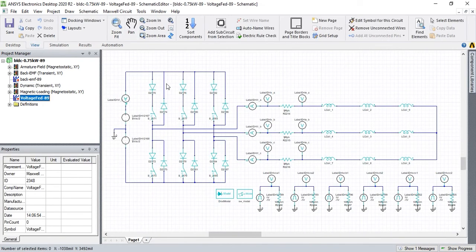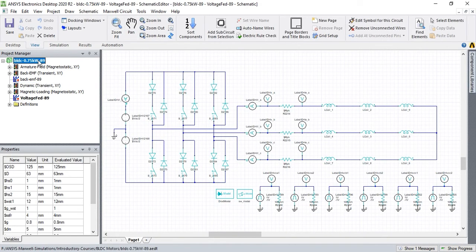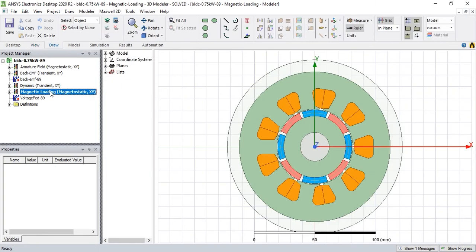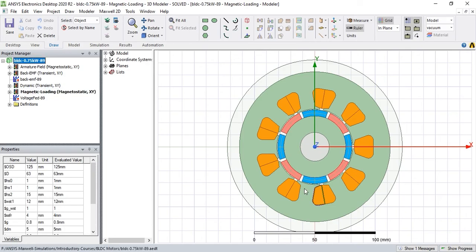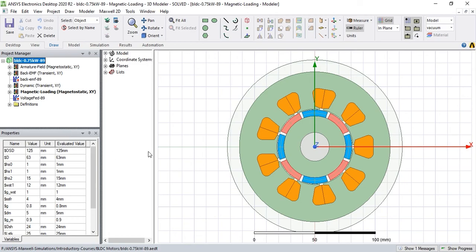ANSYS Maxwell software is good because it has a powerful parametric environment and you can generate parametric designs here, easily change these parameters and update all of these designs. You can do parametric calculations, sweep calculations, as you know is very good for sensitivity analysis purposes.